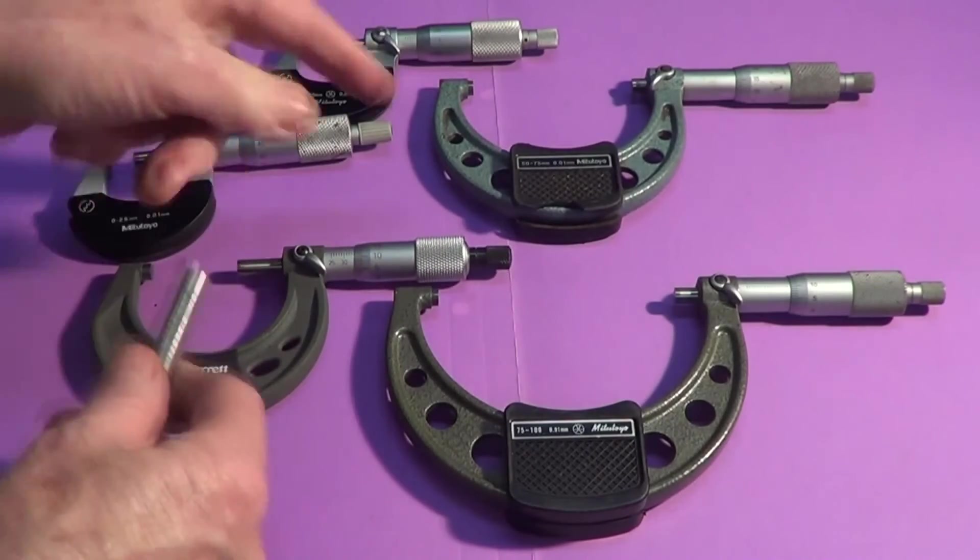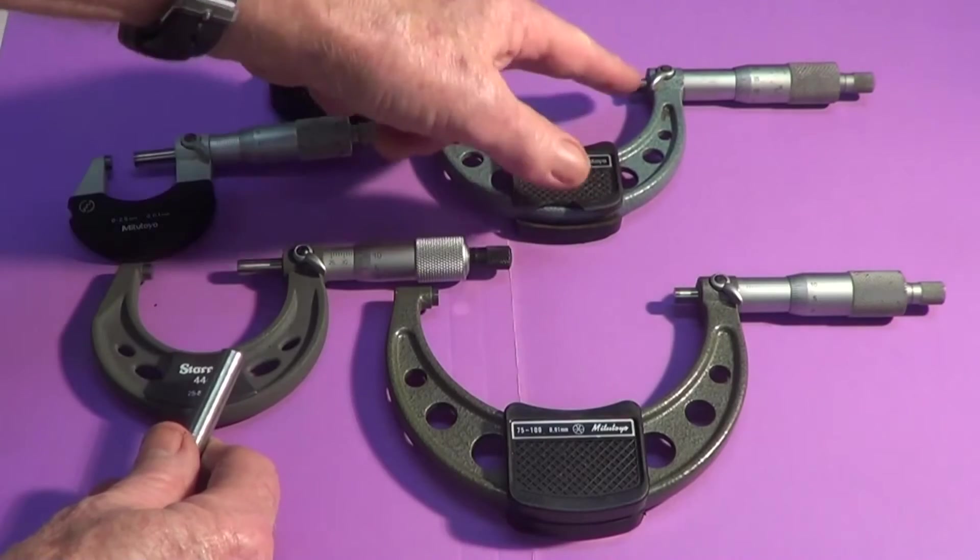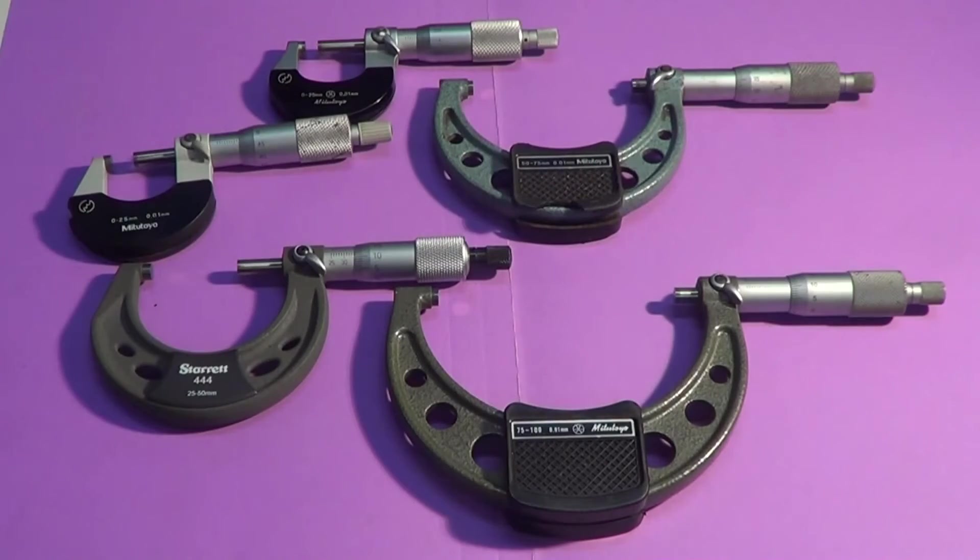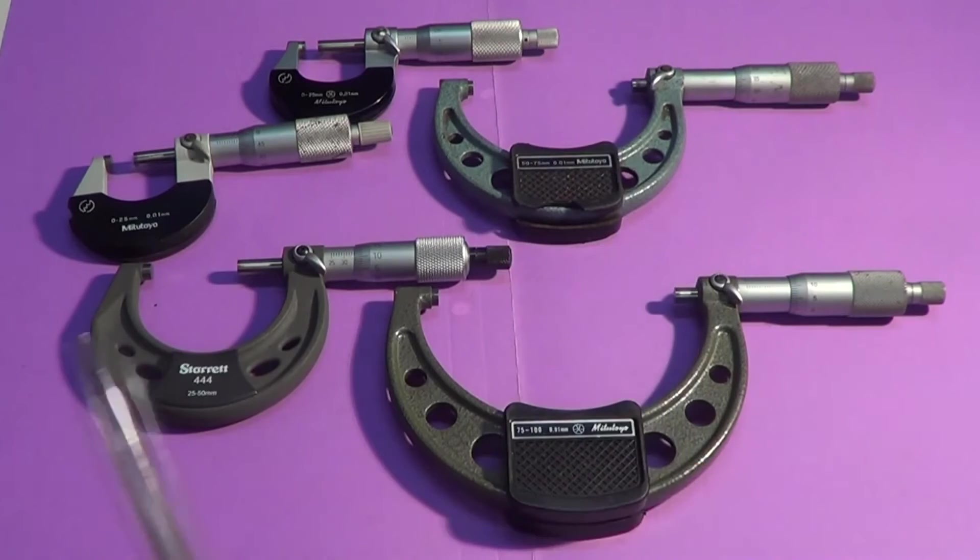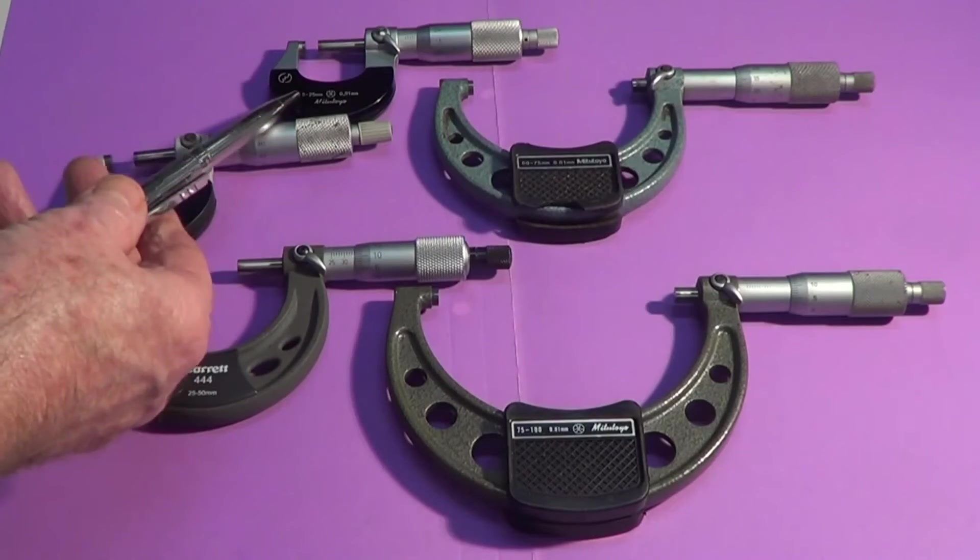Micrometers come in sets. You get zero to twenty-five, twenty-five to fifty, fifty to seventy-five, and then seventy-five up to one hundred. You can also get right up to a hundred and fifty millimeters, which would be a standard workshop set of micrometers.